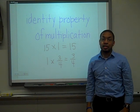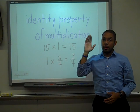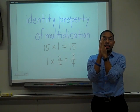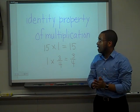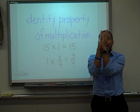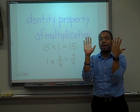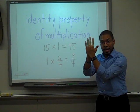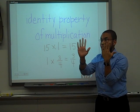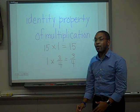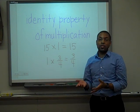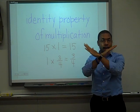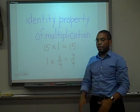The identity property of multiplication says: if you have a number and you multiply it by 1, you will get the same number. If you have a factor and you multiply it by 1, you will get the same factor as your product. I have 15, multiplying it by 1, and I should get the same identical answer: 15. I have 3 fourths, and multiplying 3 fourths by 1 is going to equal 3 fourths. Any number multiplied by 1 will give you the same number as your answer.